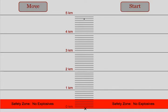The student can hit the Move button and get a random location for the explosion. We'll start at one of the closest possible distances, about 500 meters from the observing location.